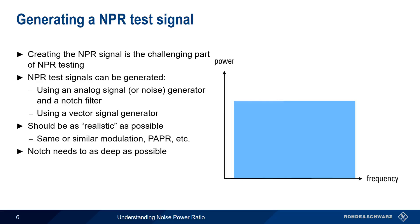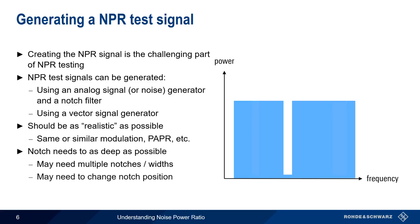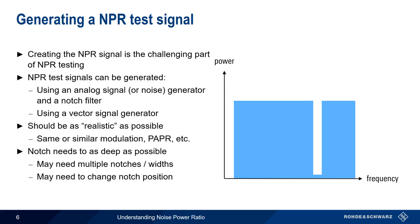We also need the notch to be as deep as possible, especially if the level of intermodulation distortion is low. Depending on our test requirements, we may need more than one notch, or notches with different widths. And finally, we may need to change the position of the notch to measure the IMD at different points.